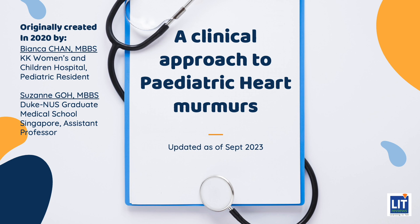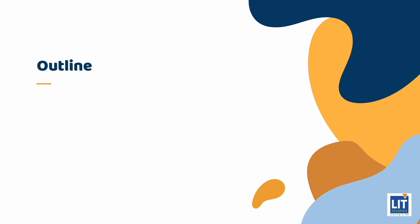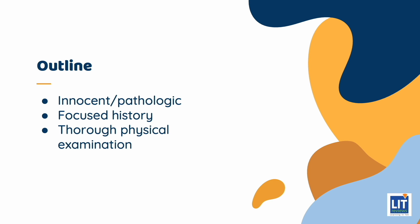A Clinical Approach to Pediatric Heart Murmurs. When evaluating a heart murmur, the most important thing to determine is whether the murmur is innocent or pathologic. The majority of cardiac murmurs in children are innocent with no underlying heart defect. However, it is important to identify pathologic murmurs that are a manifestation of cardiac abnormalities. In this lecture, we will go through how to take a focused history and a thorough physical exam to identify the likely cause of the murmur and determine whether further investigations or cardiologist referrals are necessary. We will discuss the common causes of heart murmurs and the investigations and management required.